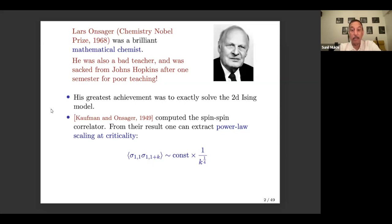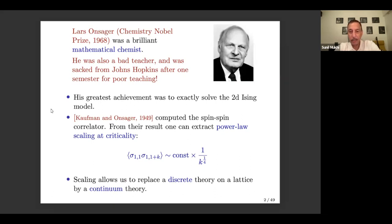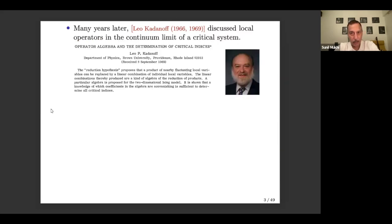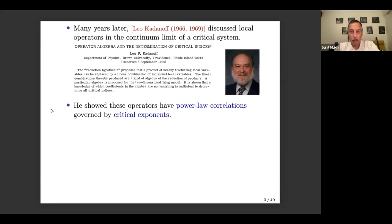From these early solutions, the theory developed quite rapidly. The Ising model is a lattice theory, but once we have scaling, we can take the continuum limit, making the lattice finer and finer, and that's the system we can study using techniques of quantum field theory. Many years later — there's a very big gap between 1949 and 1966 or so — Kadanoff discussed local operators in the continuum limit of a critical system in his 1969 paper. His basic approach was to show that operators like the spin operator have power law correlations governed by critical exponents.